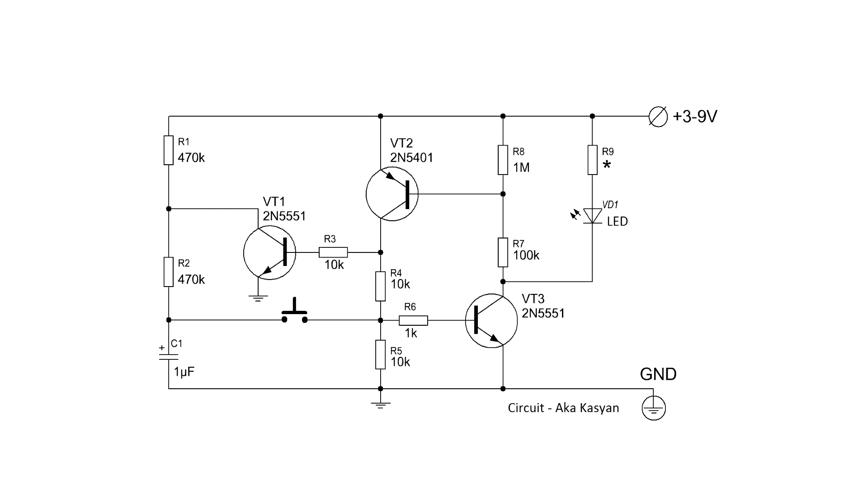The circuit is very simple and consists of three transistors, two of which are reverse conductivity. How does it work? At the initial moment when the circuit is powered, all three transistors are closed. At the same time, an electrolytic capacitor is charged through a chain of resistors. The voltage on it is equal to the supply voltage.